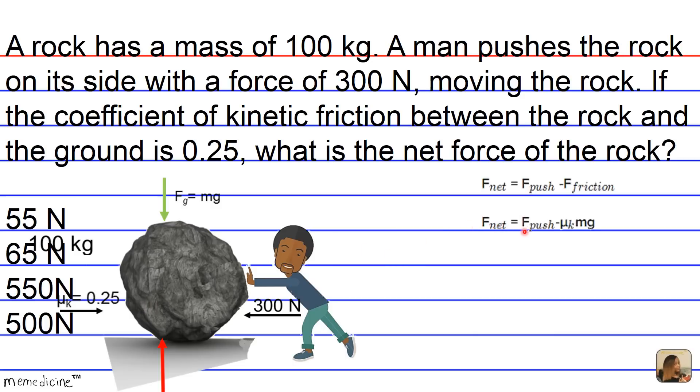So F net equals F push minus μₖ mg because the force of friction is the coefficient of kinetic friction times the normal force. And since the normal force has the same magnitude as the force due to gravity, we can substitute that information.